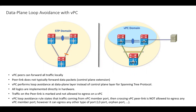Now, let's discuss loop avoidance in VPC. First, let's discuss STP in a traditional Layer 2 domain. To avoid loops, we use STP protocol which runs in the control plane. STP avoids loops by blocking redundant links. But what happens if the STP process fails? We get a loop.